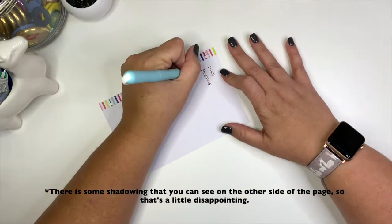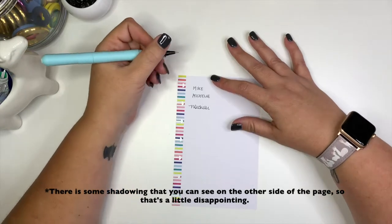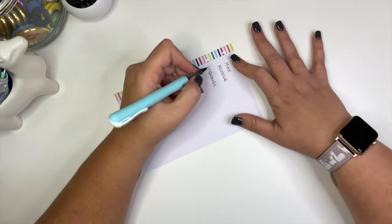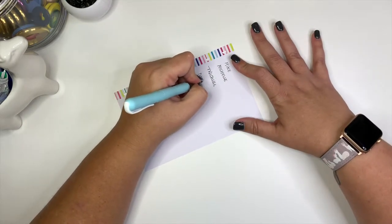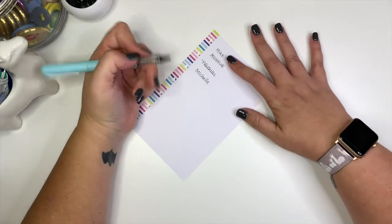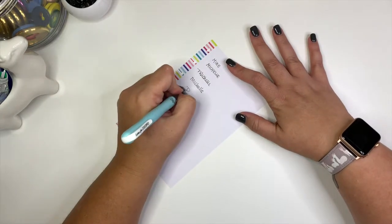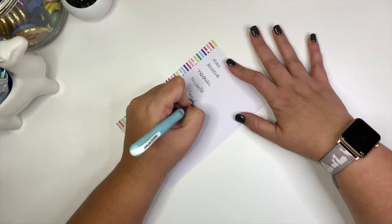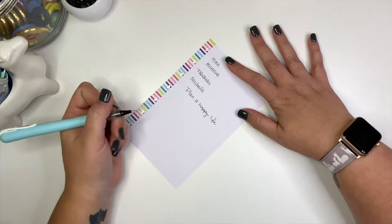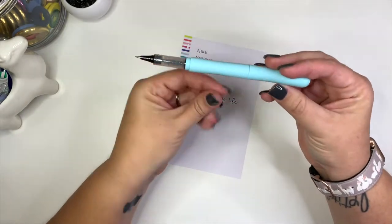It's a little bit scratchy and a little bit resistant when it writes, but it apparently dries really quick. So let's see. There's a little bit of a smudge if you don't let it dry just for a few seconds, but other than that...